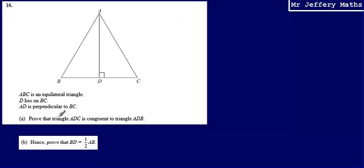And what we're asked to do is prove that triangle ADC is congruent to triangle ADB. Now that word congruent, when we're talking about triangles, just means two triangles which are identical in terms of their angles and the lengths of their sides.